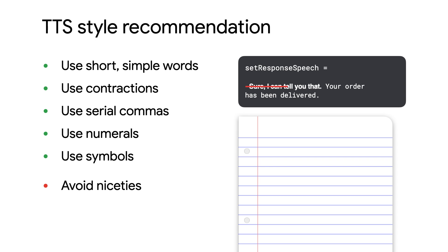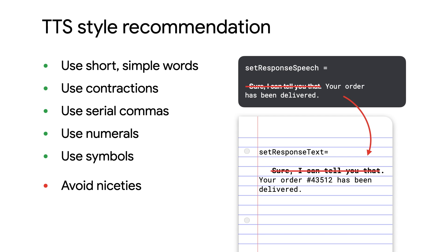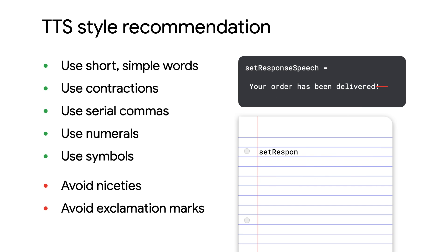Now a few things to avoid. First, avoid niceties — they make responses feel distant and formal, so ditch them and keep the tone friendly and informal. For example, by removing 'sure, I could tell you that,' it keeps the content plain and simple. Finally, avoid exclamation points, as they can be perceived as shouting.